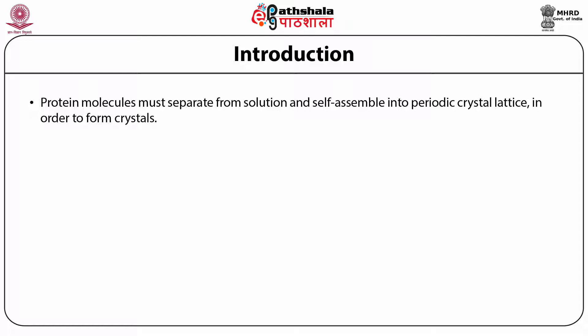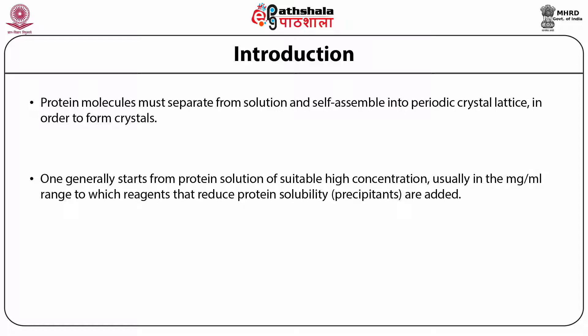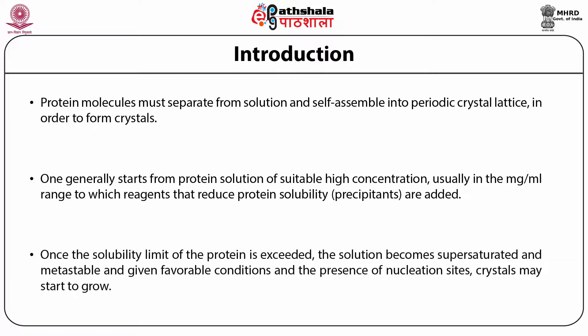Protein molecules must separate from solution and self-assemble into a periodic crystal lattice in order to form crystals. One generally starts from a protein solution of suitable high concentration, usually in the milligram per ml range, to which reagents that reduce protein solubility — or precipitants — are added. Once the solubility limit of the protein is exceeded, the solution becomes supersaturated and metastable and, given favorable conditions and the presence of nucleation sites, crystals may start to grow.